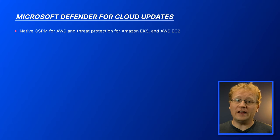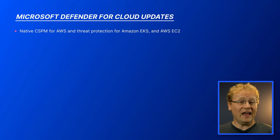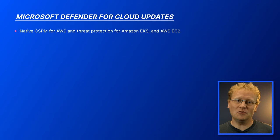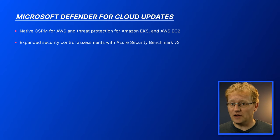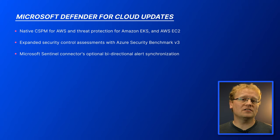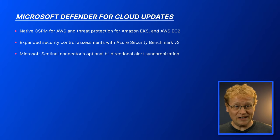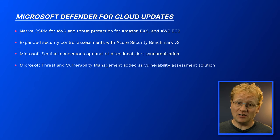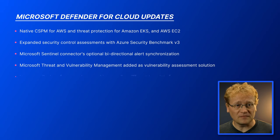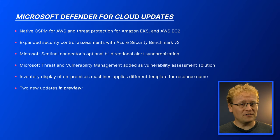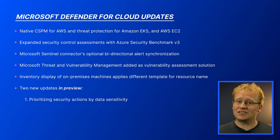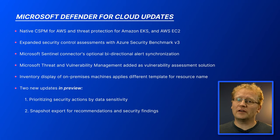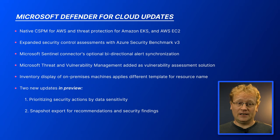Native CSPM for AWS and threat protection for Amazon EKS and AWS EC2 — yes, another Azure service that works with AWS. Expanded security control assessment with Azure Security Benchmark V3. Microsoft Sentinel connectors optional bi-directional alert synchronization, which is really handy for getting alerts back into Sentinel for someone to action. Microsoft threat and vulnerability management added as a vulnerability assessment solution. Inventory display of on-premises machines applies different templates for resource name. And finally, two new updates in preview: prioritizing security actions by data sensitivity, and snapshot export for recommendations and security findings. There are more updates that you can find using the link in the description.